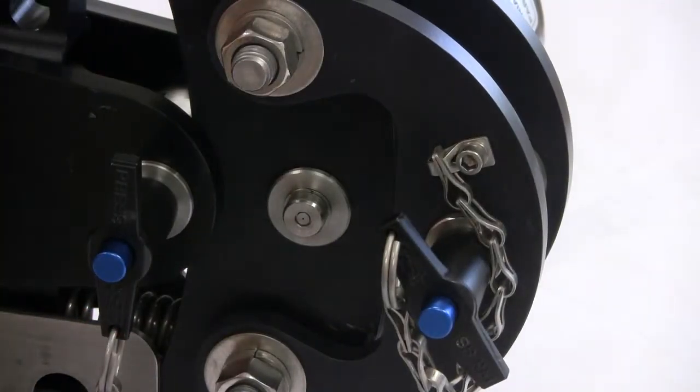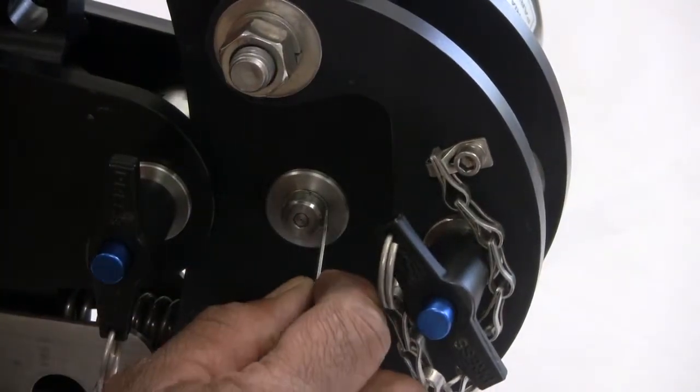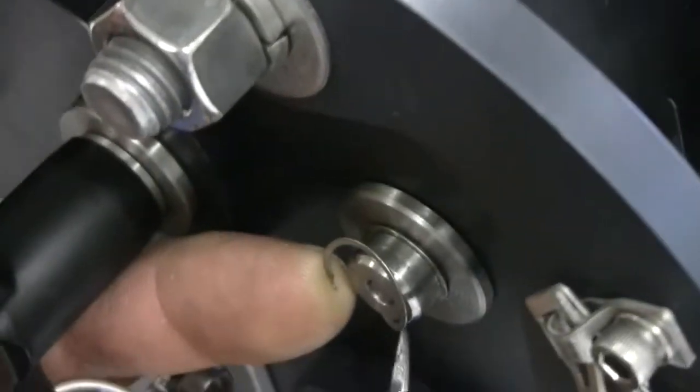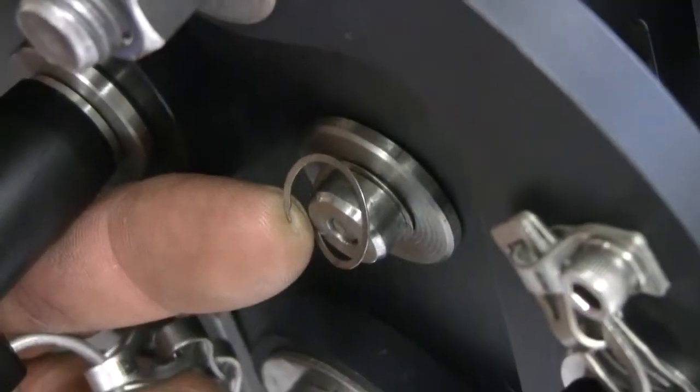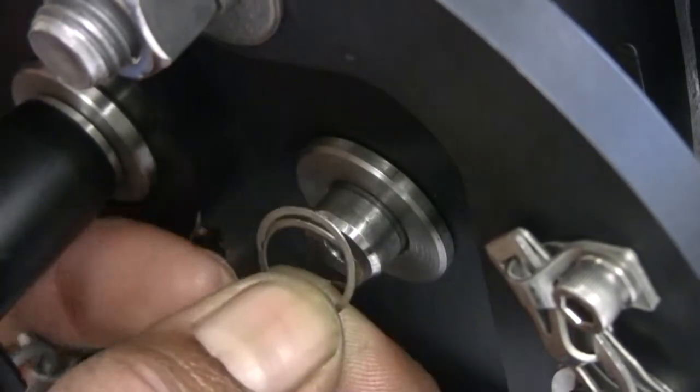The first step is to remove the spiral lock from the load pin shaft. If the spiral lock has not been damaged, it may be used again on reassembly.